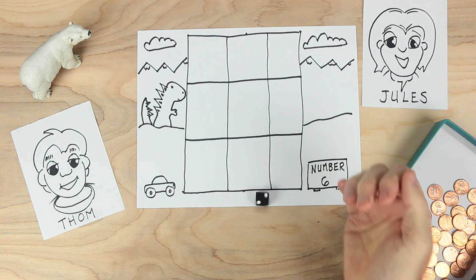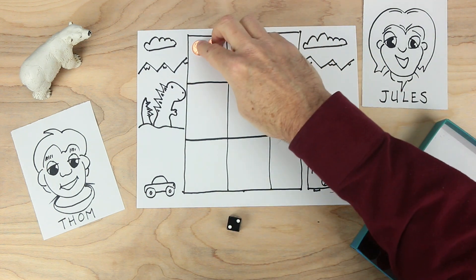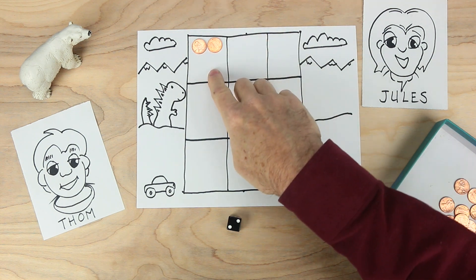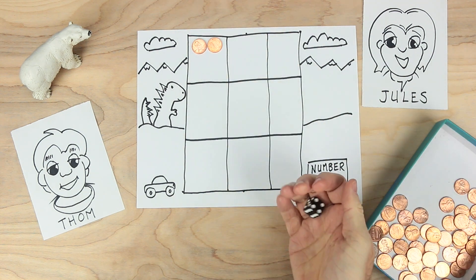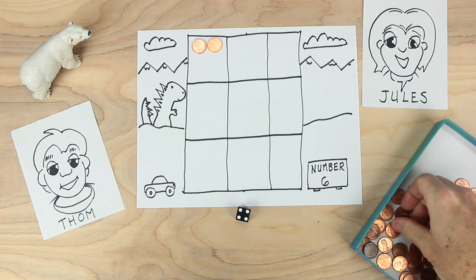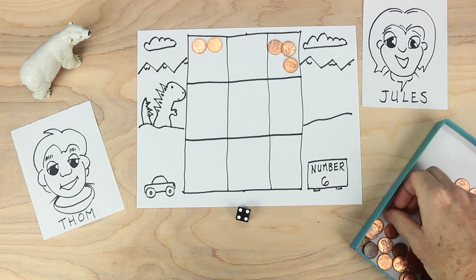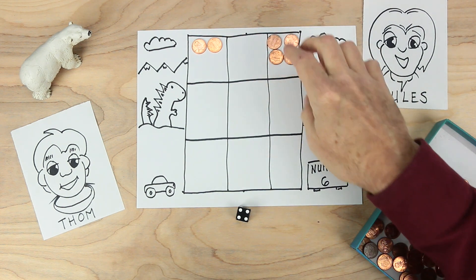Tom will start. Tom rolls a two. Tom decides to take two coins and put them up in this corner here. Remember the limit is six. Jules takes a turn. Jules rolls a four. And Jules decides to put four in the opposite corner. There's still room for two more coins in this box.